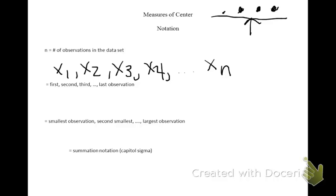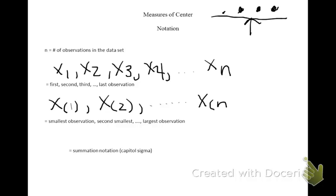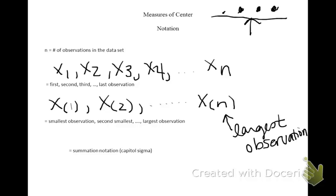To indicate the smallest data set number, we'll put x parentheses 1. Parentheses means ordered. The next smallest would be x parentheses 2, all the way up to x parentheses n. This is your largest, and this is your smallest.